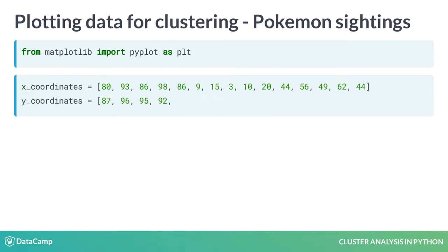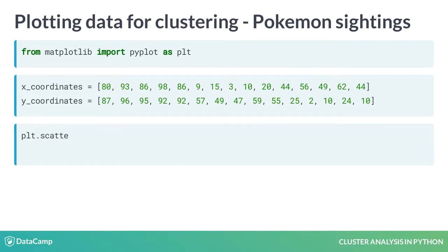Next, we define the coordinates of points to be plotted in two lists — one each for x and y coordinates. In this case, we have 15 sightings that we would like to plot. Finally, we use the scatter method of the pyplot class with the lists of coordinates as arguments, and the plot method to display the plot.